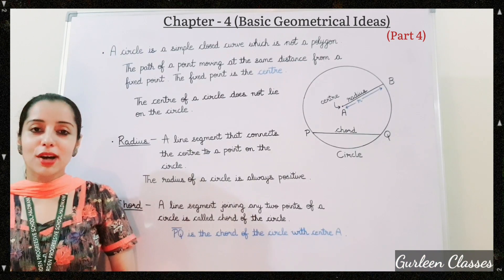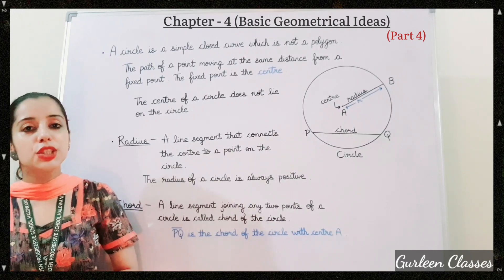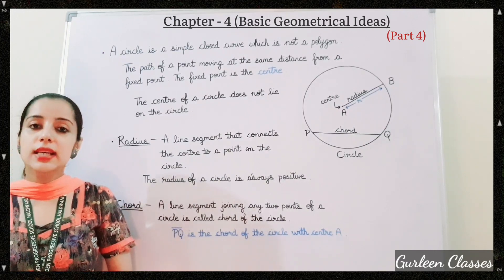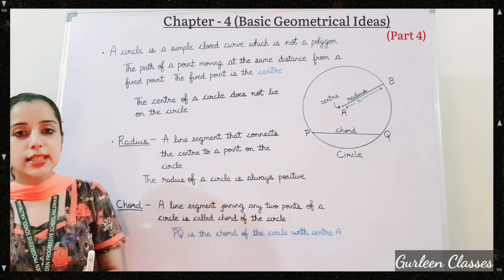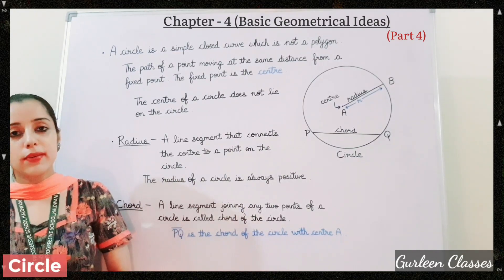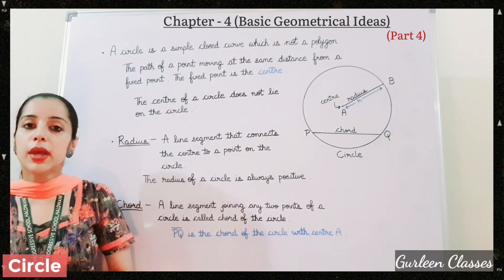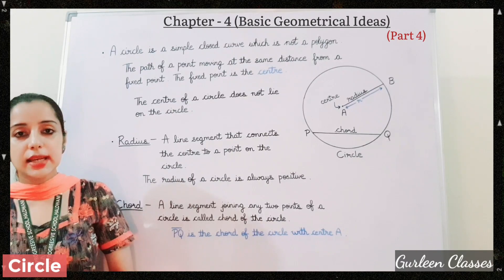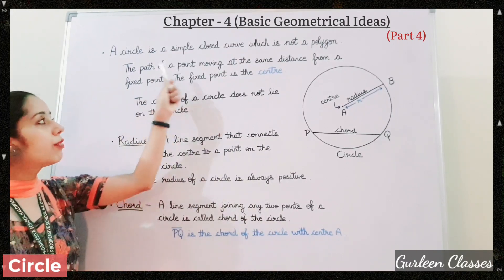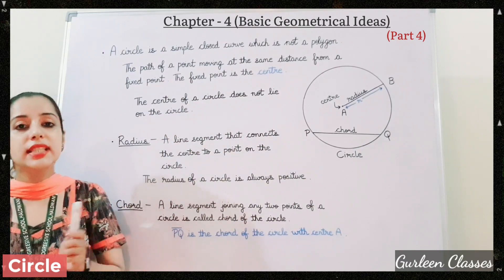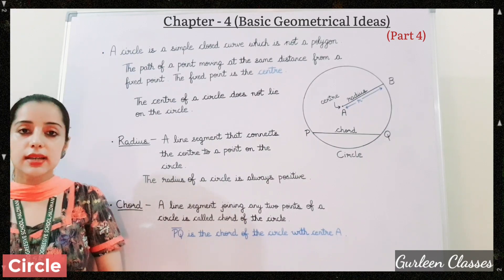Let us start with the first topic of today — what is a circle? You all have learnt about circles in your junior classes. A circle is a round flat shape. It has no corners and no edges. A circle is a simple closed curve which is not a polygon, since a polygon is made up of line segments. The path of a circle is the path of a point moving at the same distance from a fixed point.